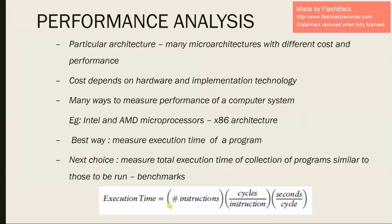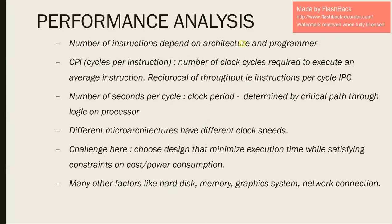Execution time is given as the number of instructions multiplied by cycles per instruction, again multiplied by the seconds per cycle. The number of instructions depends on the architecture and the programmer. Architectures like CISC consist of complex instructions while RISC consists of reduced instructions. If the programmer writes optimized code, the number of instructions will be much lesser.